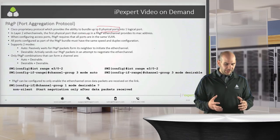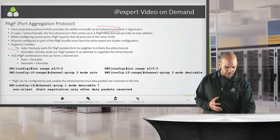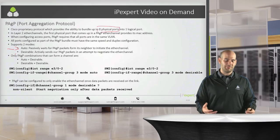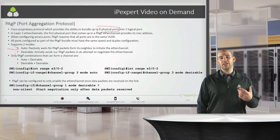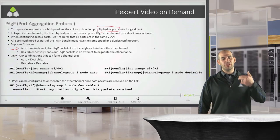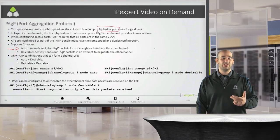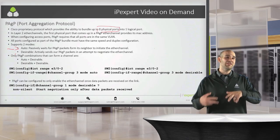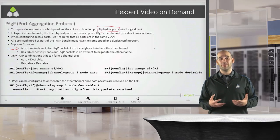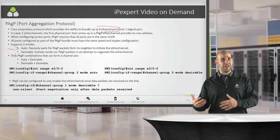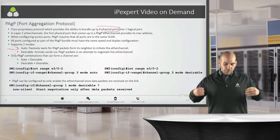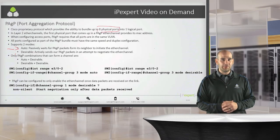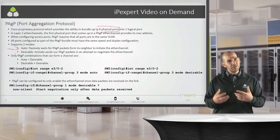There are two important modes in PAGP: auto and desirable. When we configure an EtherChannel in auto, we wait for the other side to initiate it. We can have auto-and-desirable or desirable-and-desirable, but auto-and-auto will not work, because both sides would be waiting for the other to initiate the PAGP EtherChannel negotiation.